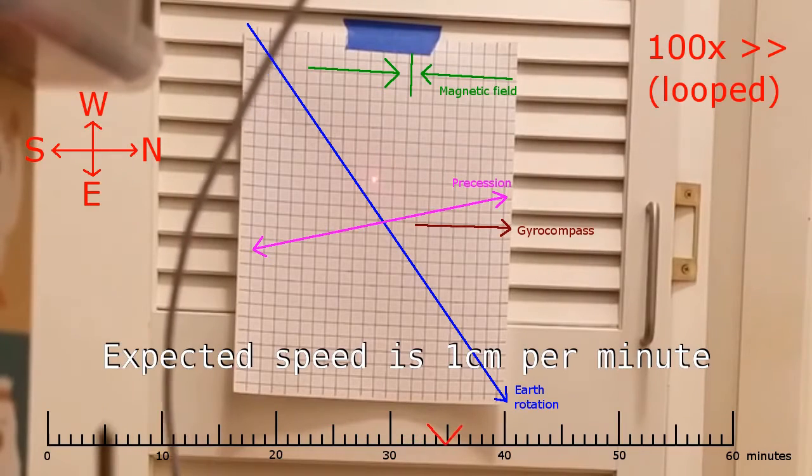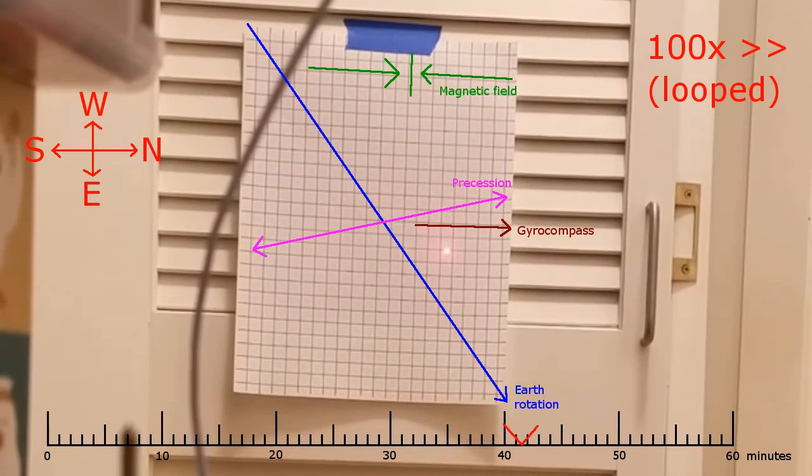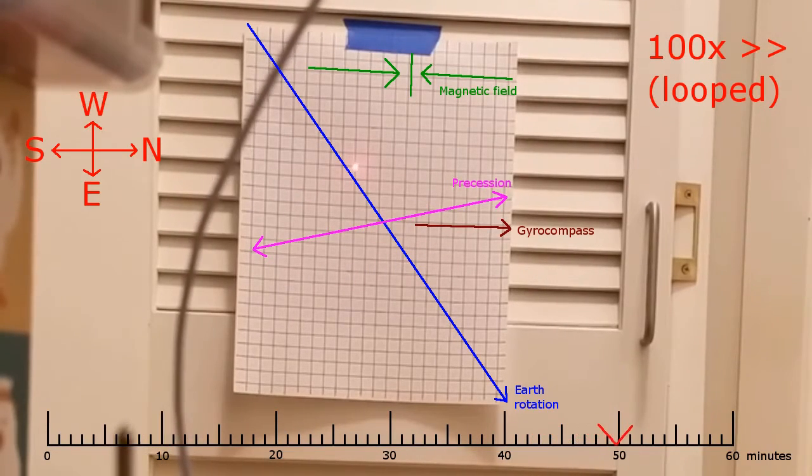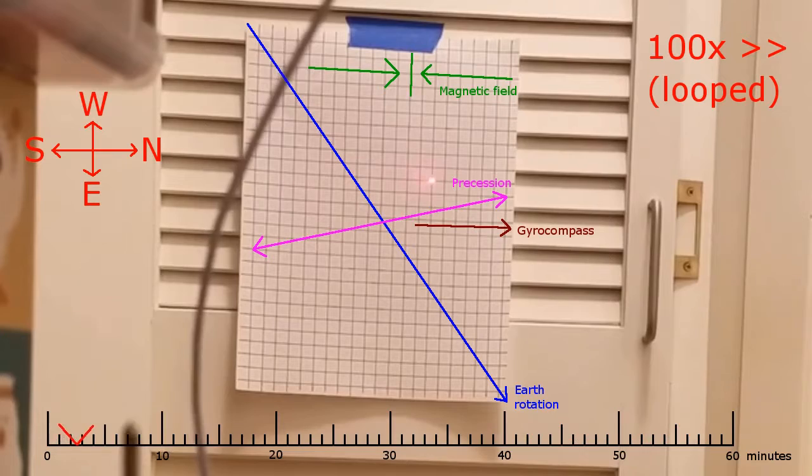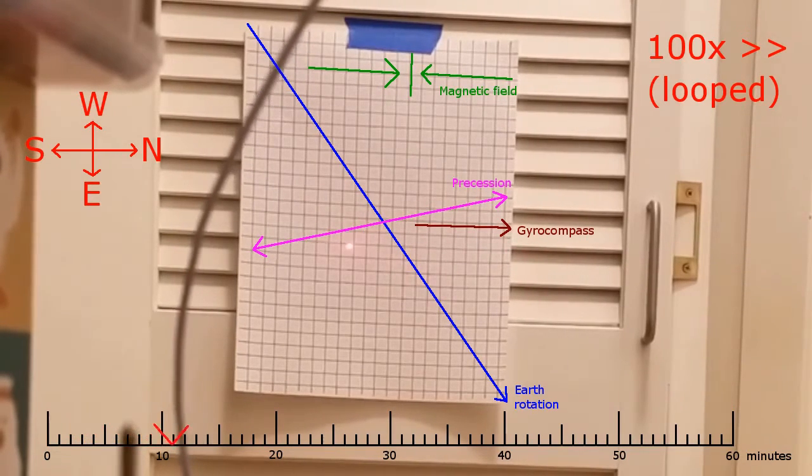But I think this is still a reasonably convincing demonstration that the Earth rotation signal is there. You could argue that this is precise enough to make a measurement of the rate of rotation. That's probably a bit of a stretch, but at least I think it's reasonably clear that there's some kind of signal there.